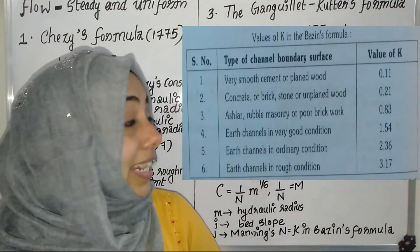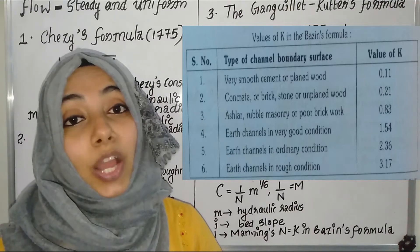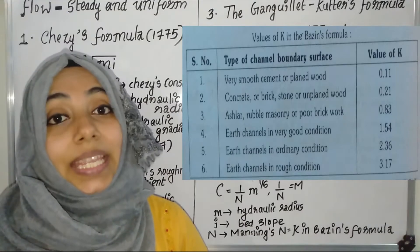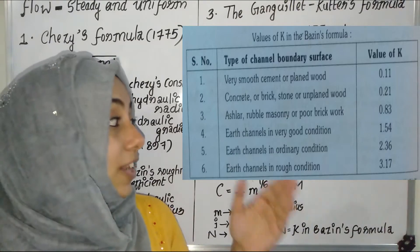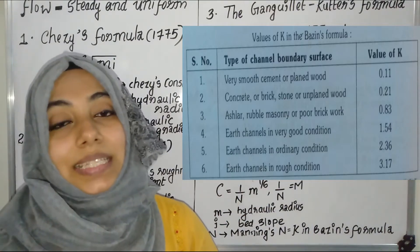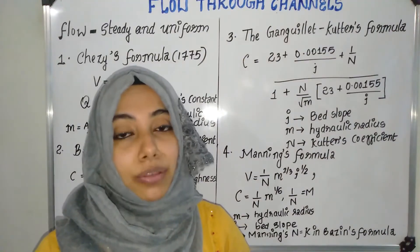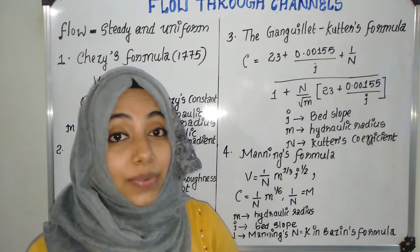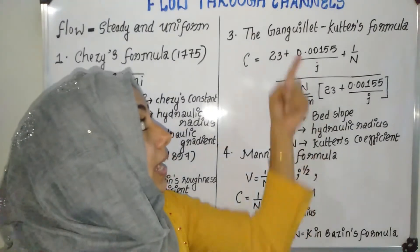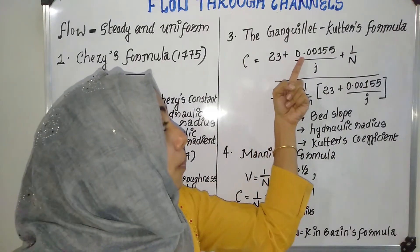Here a tabular column is given which gives the values of K depending upon different boundary surfaces. This tabular column shows Bazin's roughness coefficient with different values for different boundary surface conditions.